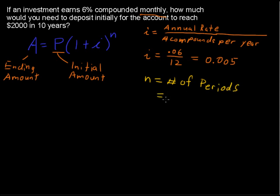So an easy way to think of that is the number of times it's compounded per year times the number of years. So I'll write that out real quickly. Number of compounds per year multiplied by the number of years.